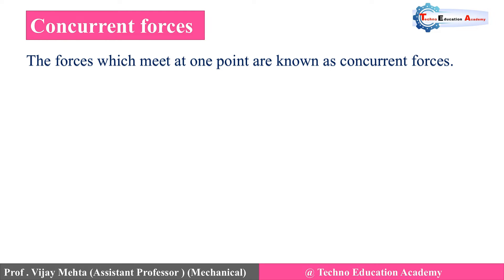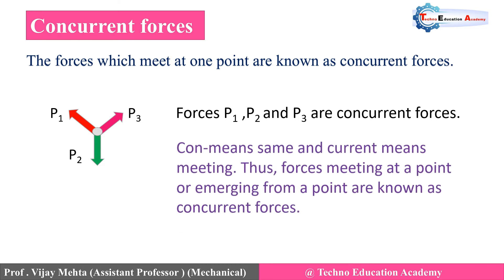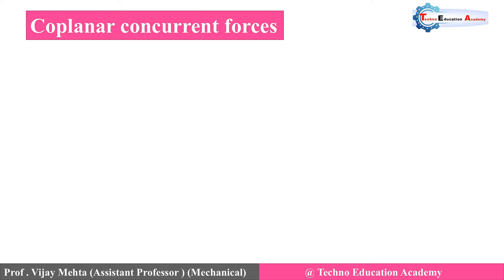The next type is concurrent forces. The forces which meet at one point are known as concurrent forces. Here you can see that the three forces P1, P2, and P3 are acting on the same point, so it is called concurrent forces. 'Co' means same and 'current' means meeting, thus the forces meeting at a point or emerging from a point are known as concurrent forces.